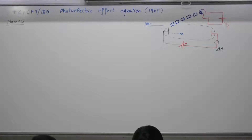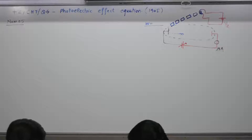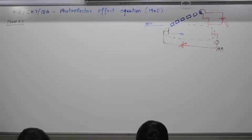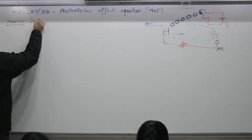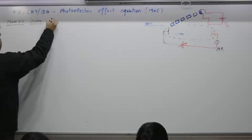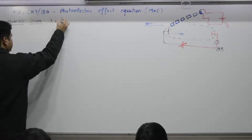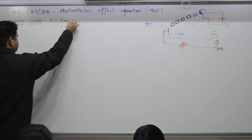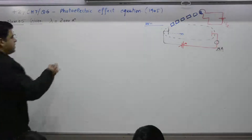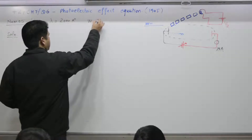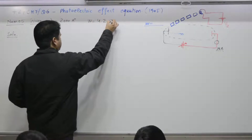(C) What is the stopping potential? (D) What is the cutoff wavelength for aluminum? Given: wavelength = 2000 Å, work function = 4.2 electron volts.